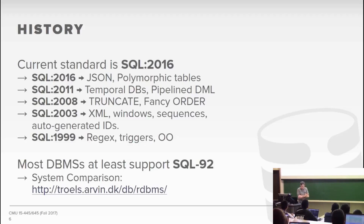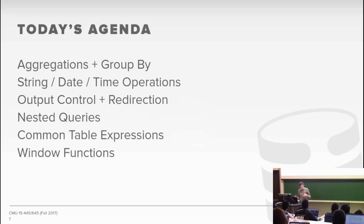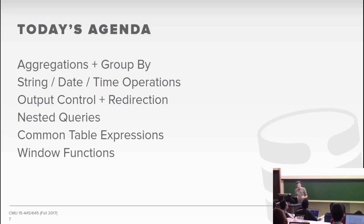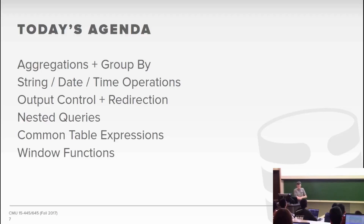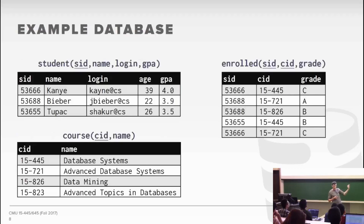For today's agenda, I want to focus on more advanced features of SQL that you'll need to complete the first homework — things that go beyond what the textbook covers. In particular, you'll really need CTEs, or Common Table Expressions. I'll give a live demo showing how Postgres, SQLite, and MySQL support these different operations and where they deviate from each other. The example database I'll use is a simple university application with three tables: a student table with student ID, name, login, and GPA; a course table with course ID and name; and an enrolled table mapping student ID to course with their grade.